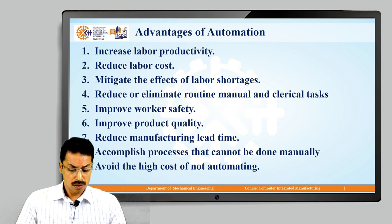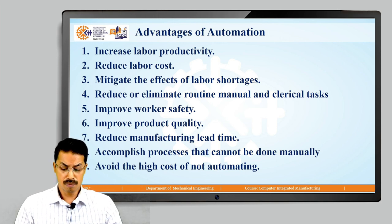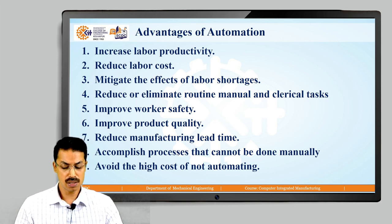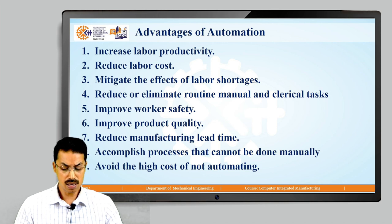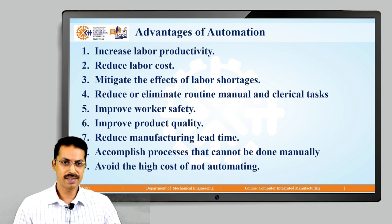Next is improved product quality. Automation not only results in higher production rates than manual operations, but it also performs the manufacturing process with greater consistency and conformity to quality specifications, so the quality of the final product also increases.